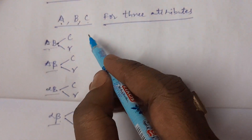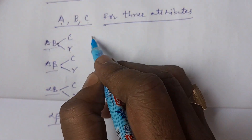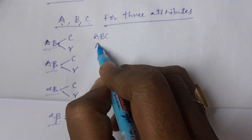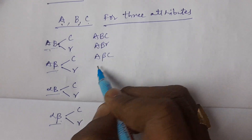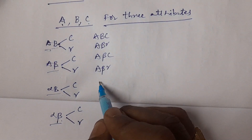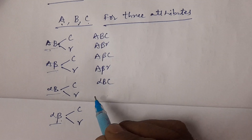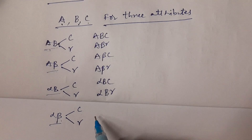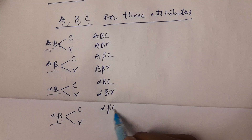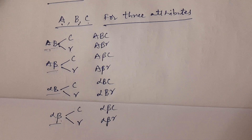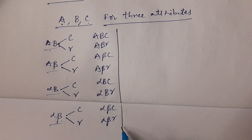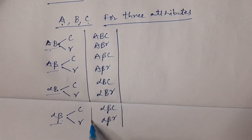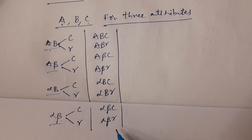Now the combinations for three attributes are 8 combinations. These are the 8 combinations of attributes of third order.